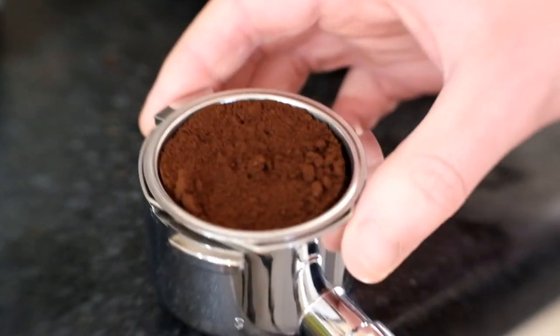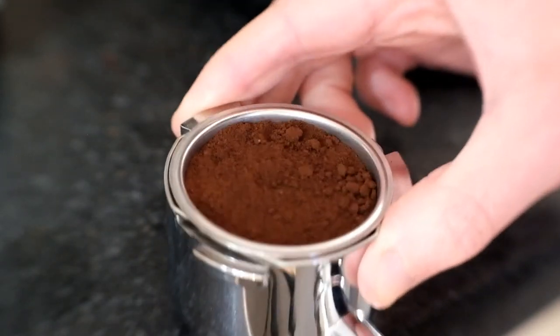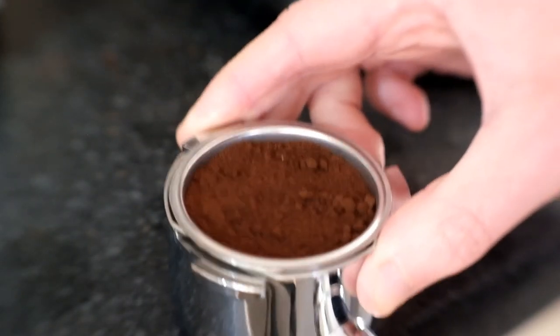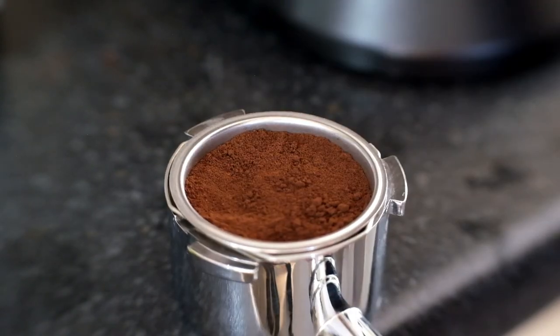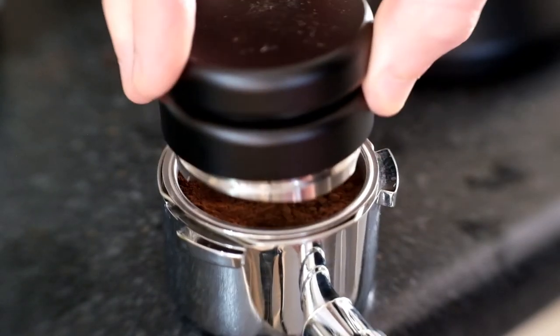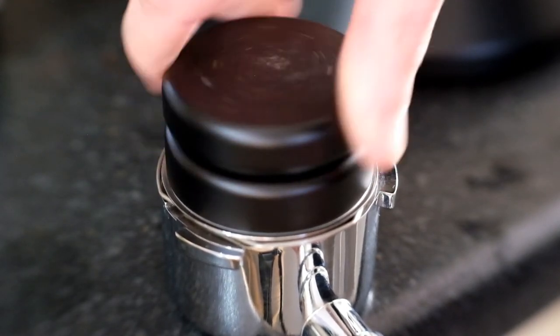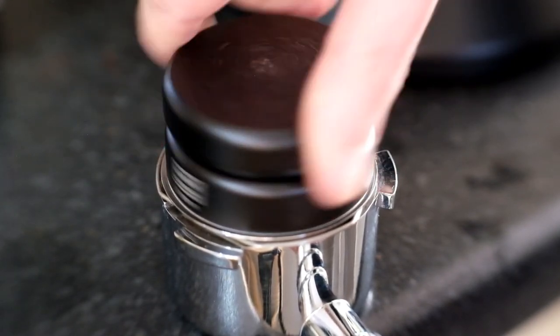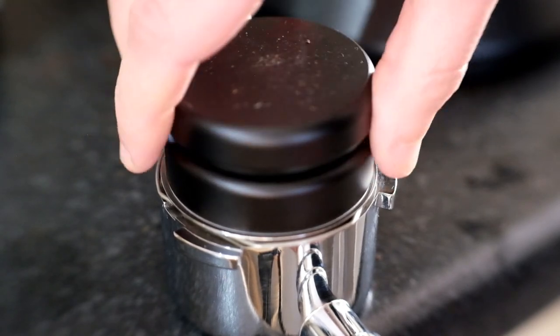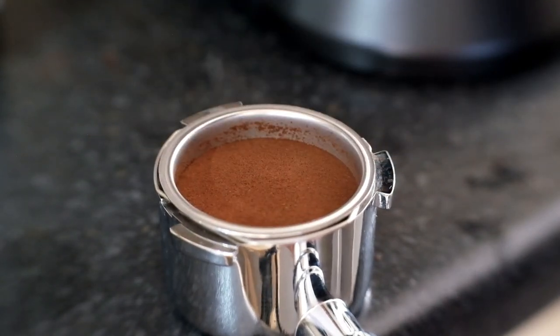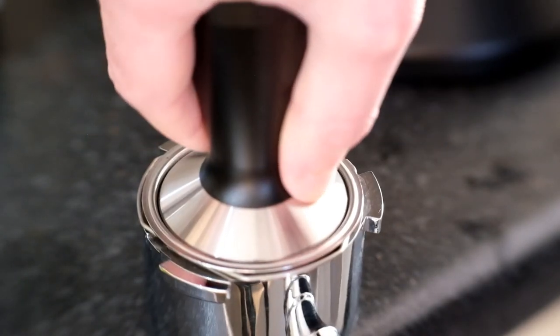Lots of small taps I tend to find settles the coffee really nicely. It makes quite a big difference to the outcome. I use the distribution tool to get it flat, but to be honest I don't think it makes an enormous amount of difference. It's just because I quite like it to look flat before I start using the tamper, so it's not something I'd necessarily go out and invest in again if I had the choice.